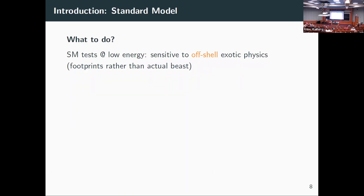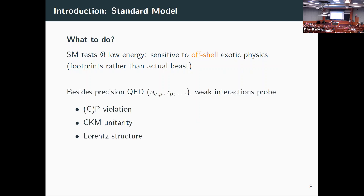What do we do? I think a great approach is to test the standard model at low energy. Rather than going to high energy at colliders to produce new particles, we can do precision measurements and be sensitive to exotic particles in an off-shell way — where new particles influence results through virtual exchange. Think of this as looking for footprints rather than trying to conjure the entire beast in an accelerator.